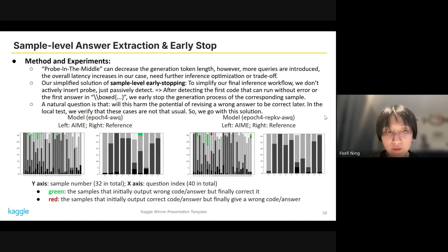In our experiment, we found that the Probe-in-the-Middle method can decrease the generation token length. However, the additional queries will cause the overall latency to increase in our case. It needs further inference optimization. So to simplify our final inference workflow, we don't actively insert a probe, just passively detect the answer. Specifically, after detecting the first code that can run without error or the first answer in the boxed parenthesis, we early stop the generation process of the corresponding sample.